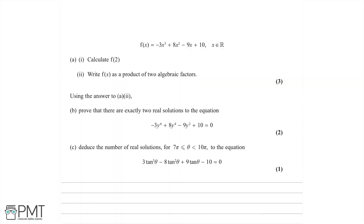In this question, we're told that f of x equals minus 3x cubed plus 8x squared minus 9x plus 10, and that x is a real number. Now we need to calculate f of 2.